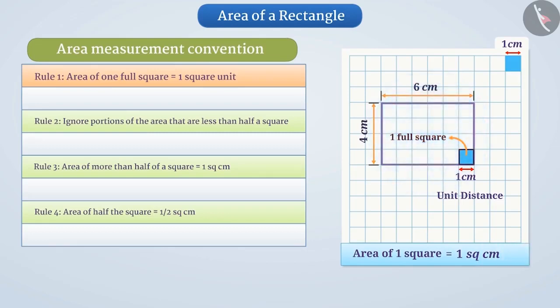In the given rectangle, we observe that the total number of full squares is 24. Since the area of 1 full square is 1 cm², we can say that the area enclosed by full squares is 24 multiplied by 1 cm² equals 24 cm².